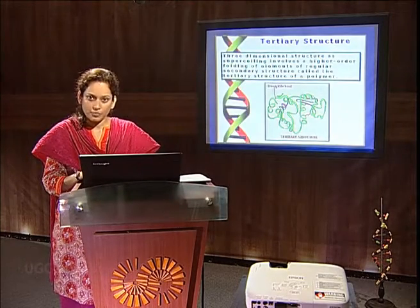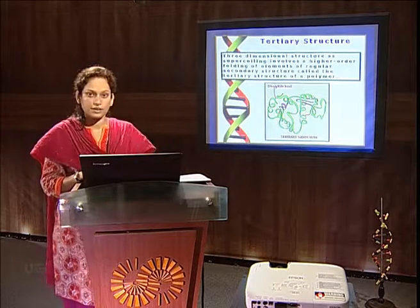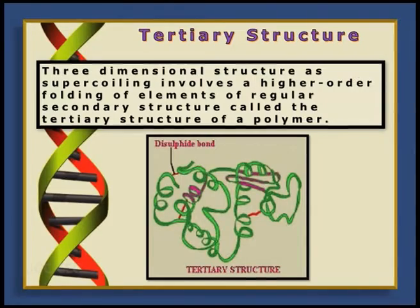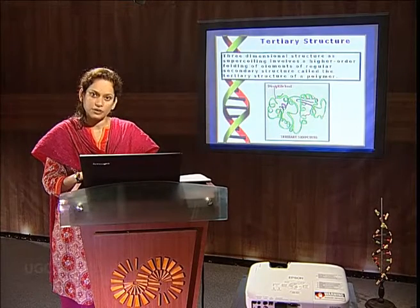Like any other biological macromolecule — as we can see here, the tertiary structure of a protein — similarly, nucleic acids also exhibit their tertiary structure. These tertiary structures are nothing but the higher-order folding of elements of regular secondary structures. These tertiary structures are very important in performing the normal physiological functions of an RNA or a DNA molecule.